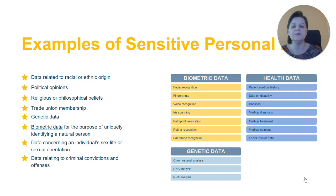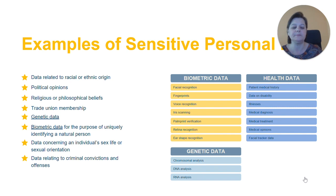On this slide, we see examples of sensitive personal data according to the GDPR. Examples include data related to racial or ethnic origin, political opinions, religious or philosophical beliefs, trade union memberships, genetic data, biometric data, and health data.